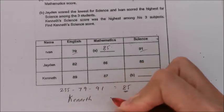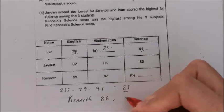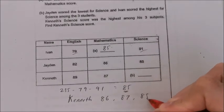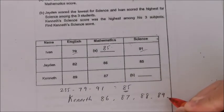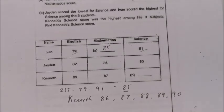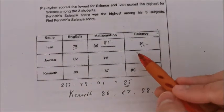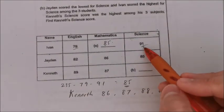We can say that his marks has to be either 86, 87, 88, 89 or 90, so that he is in the middle of Jayden's score.